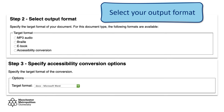Once you have uploaded your file, you will need to select the format that you would like your original document converted to. You may select MP3 audio for converting text to an audio format, Braille, eBook for converting text into a format readable by an eBook reader such as a Kindle, or accessibility conversion. Accessibility conversion allows you to convert inaccessible documents into other accessible formats, such as PDF files into Word documents.